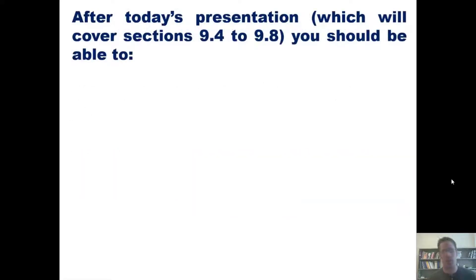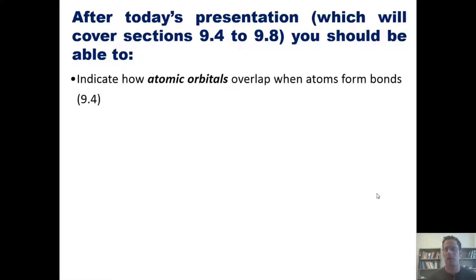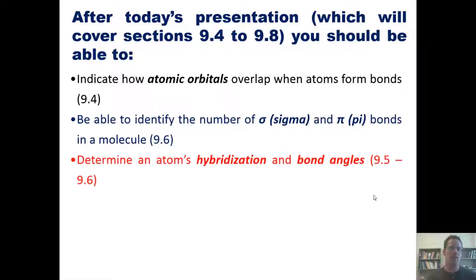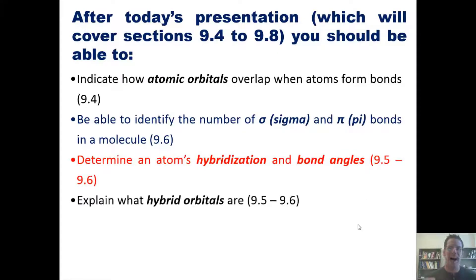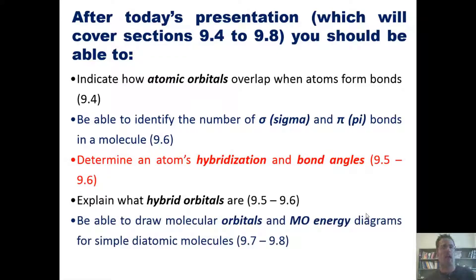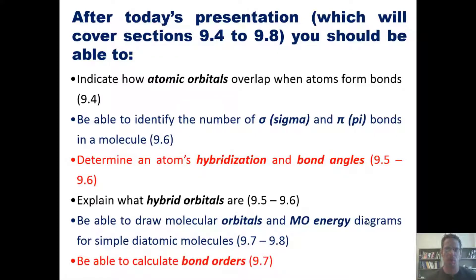After this lecture or series of presentations, you should be able to do the following: indicate how atomic orbitals overlap when atoms form bonds; identify the number of sigma and pi bonds in a molecule; determine an atom's hybridization and bond angles; explain what hybrid orbitals are; draw molecular orbitals and molecular orbital energy diagrams for simple diatomic molecules; and calculate bond orders. That's the lineup — let's get started.